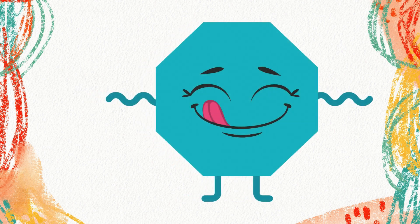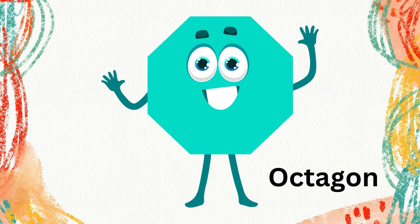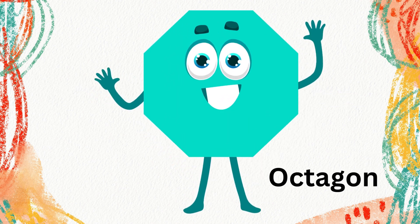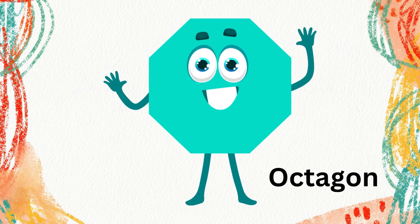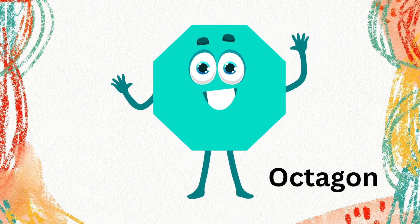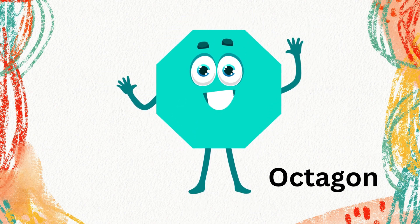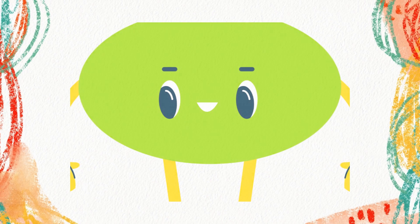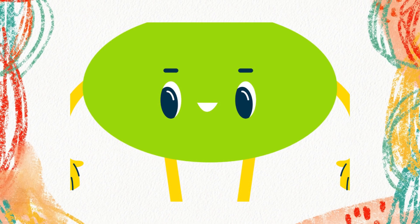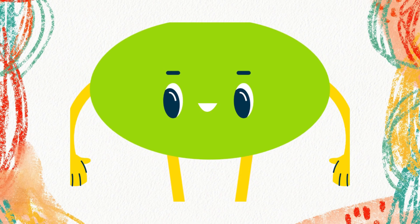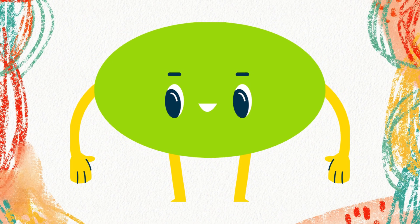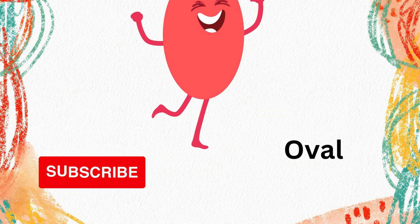Now, I look like something you've seen before, like a circle, but I look a little bit longer. What do you think I am? Yes, I am called an oval.